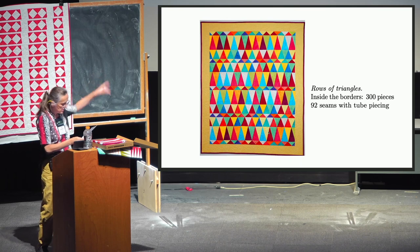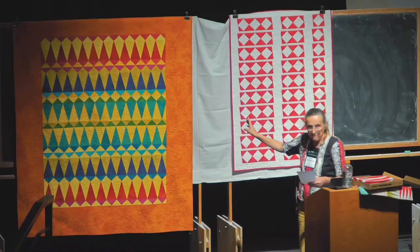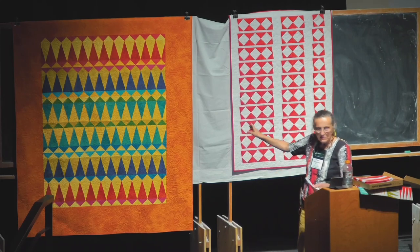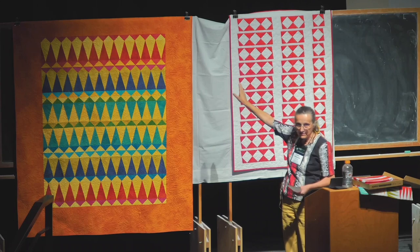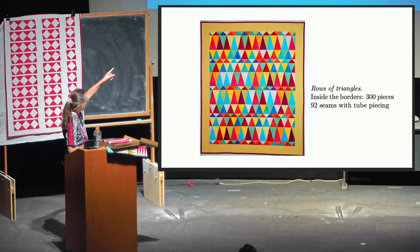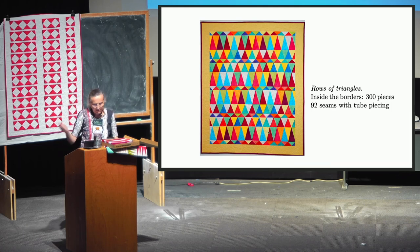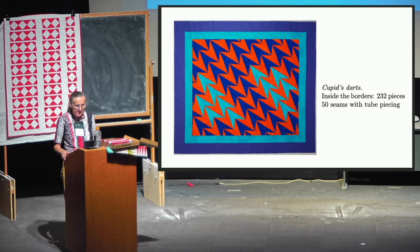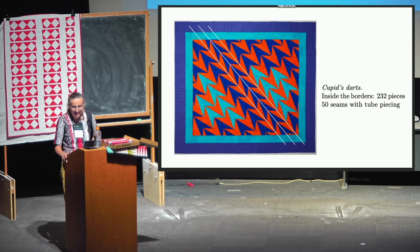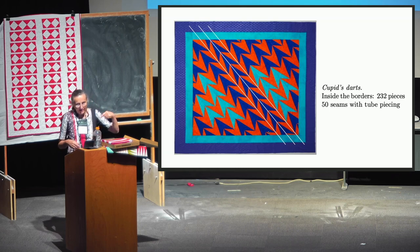That one had 92 seams; this one with more pieces had only 58 seams. The reason this one has more seams is that here I only have 30-degree and 90-degree tip angles, whereas there I also mixed in 45-degree angles — the more variety of angles used, the more tubes you have to produce. These quilts also show rows of triangles, slanted, which are mirror images of each other.